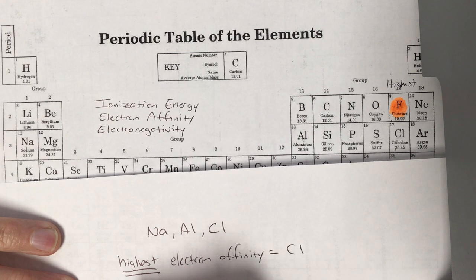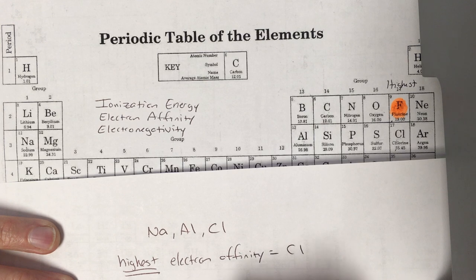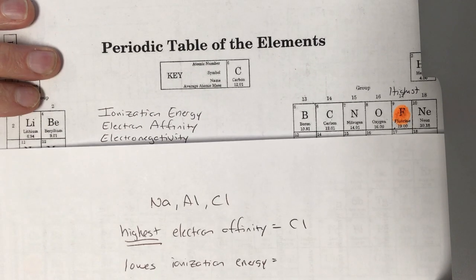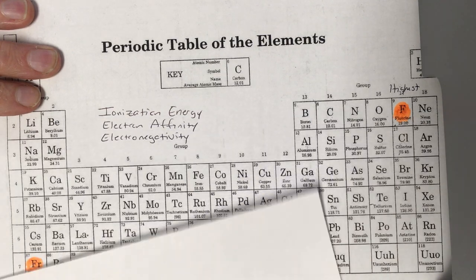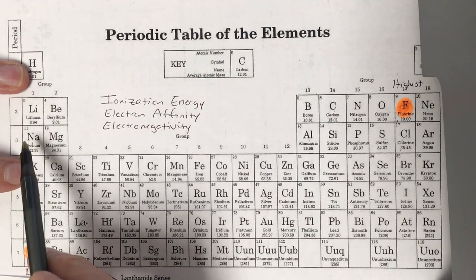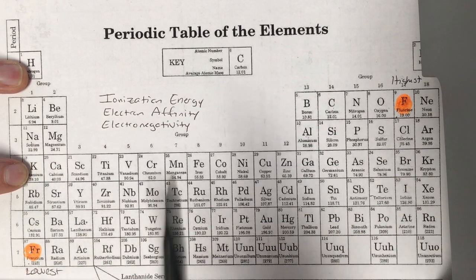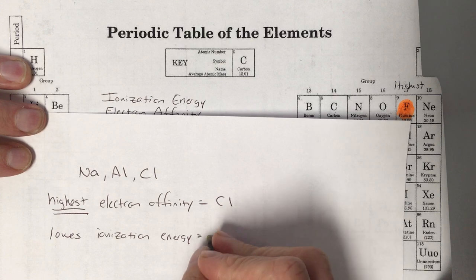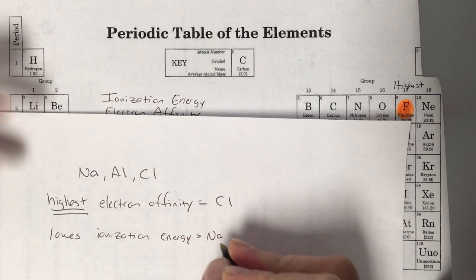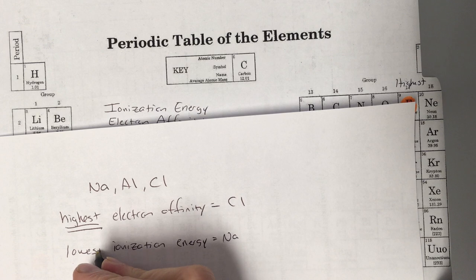If I ask for the lowest of something, like the lowest ionization energy, I look to see which of those elements is closest to francium. Among sodium, aluminum, and chlorine, sodium is the closest to francium, so it has the lowest ionization energy.